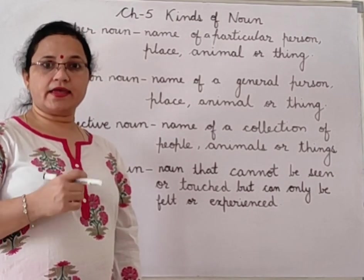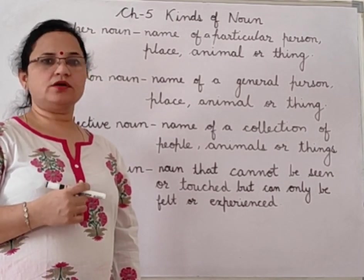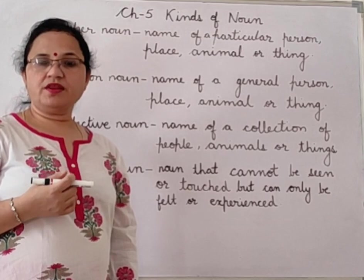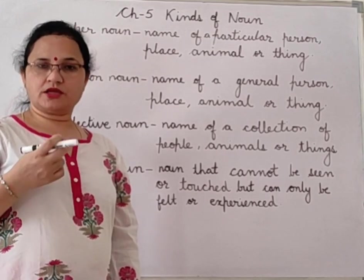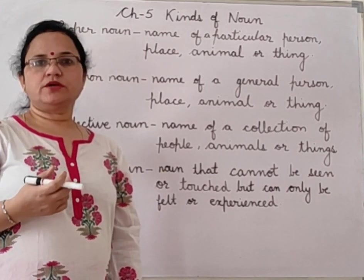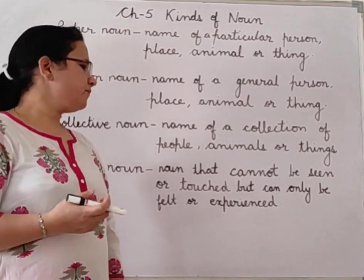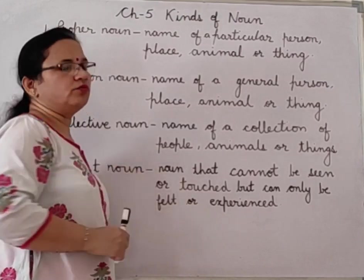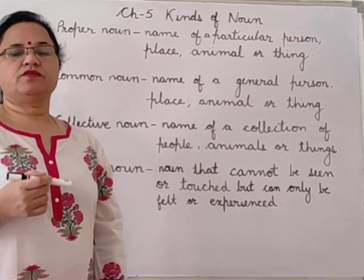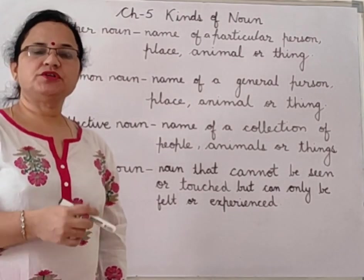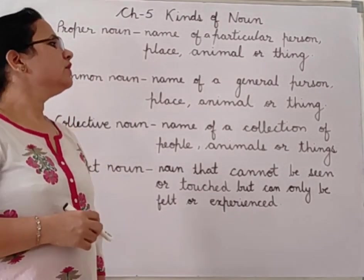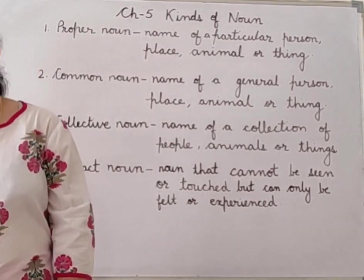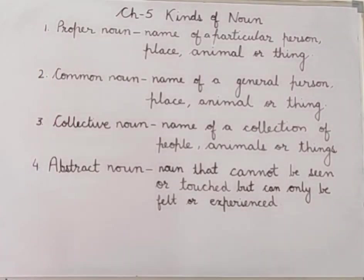Happiness, anger — can you see it? No. Bravery — can you see it, can you touch it? No. So these are abstract nouns. The noun which you cannot see, which you cannot touch, which you can only feel — that is abstract noun. So now let's do the exercise in our book.